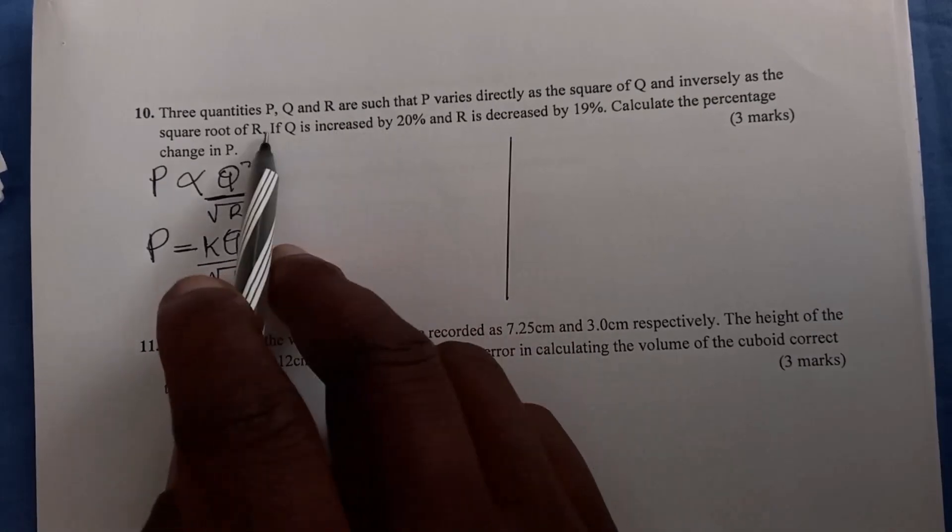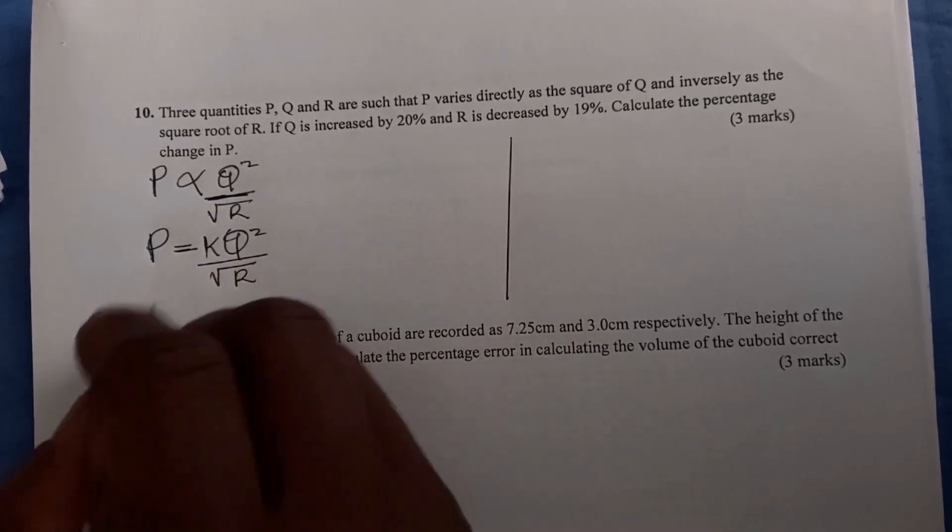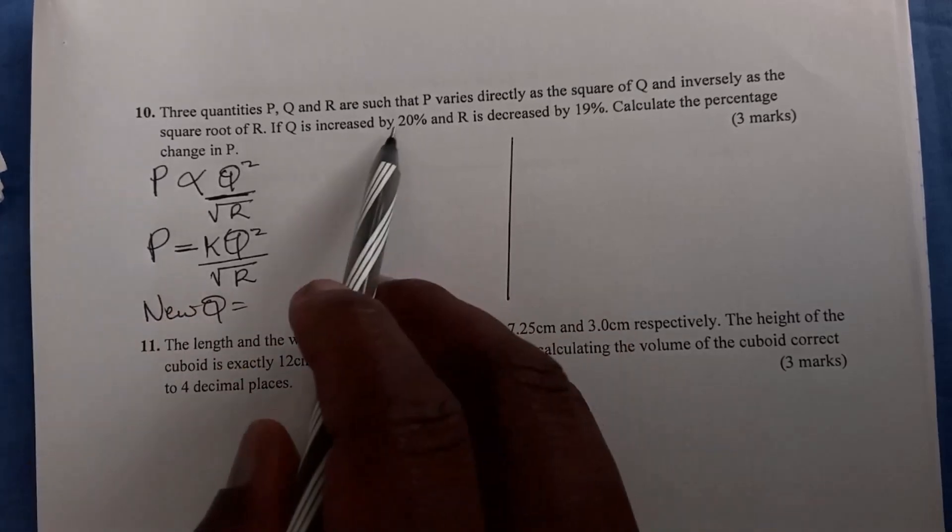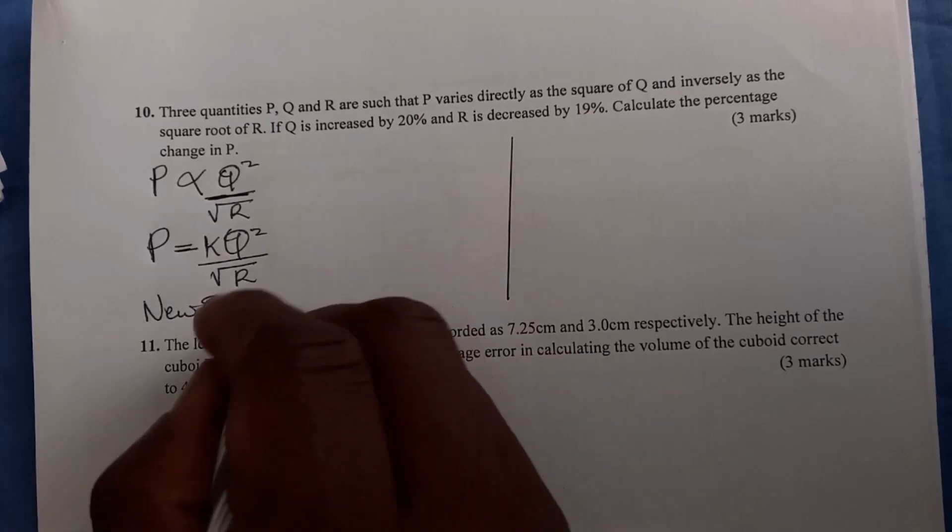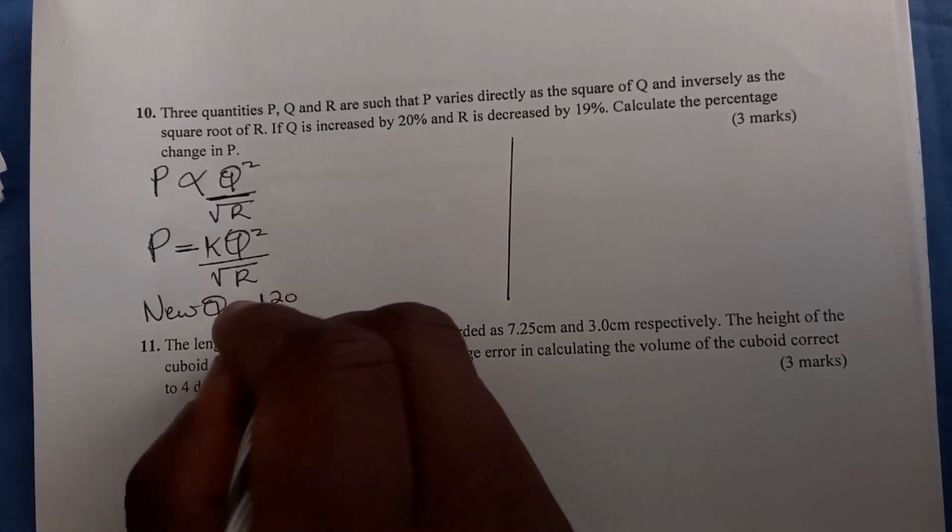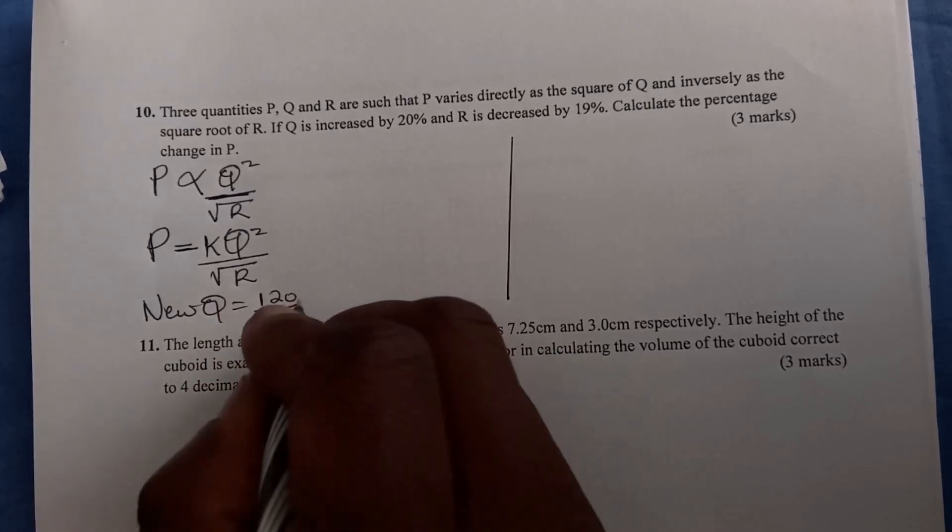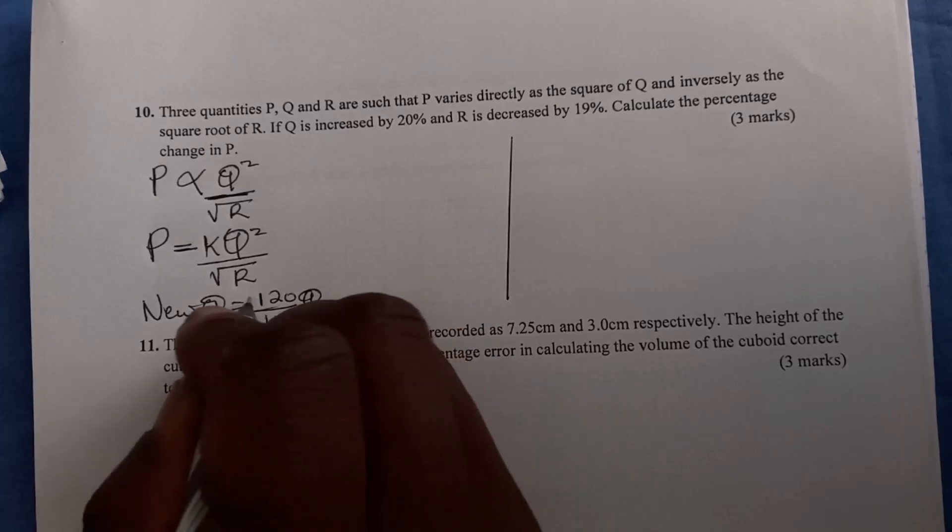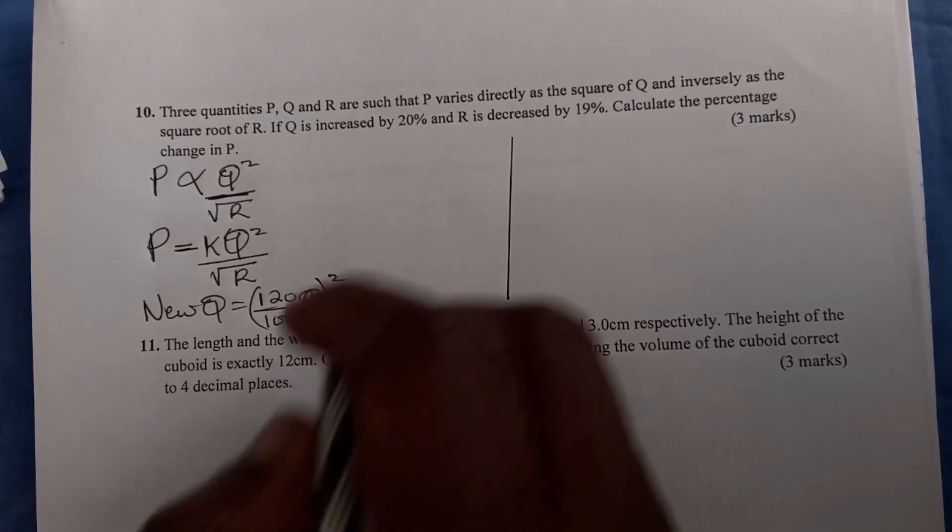Now, the next statement: if Q is increased by 20%, the new Q - the original Q was 100%, so when it's increased by 20%, you take 100 plus 20, which is 120%, or 120 over 100 times Q. And don't forget that Q is squared, you have to square this. That is new Q.